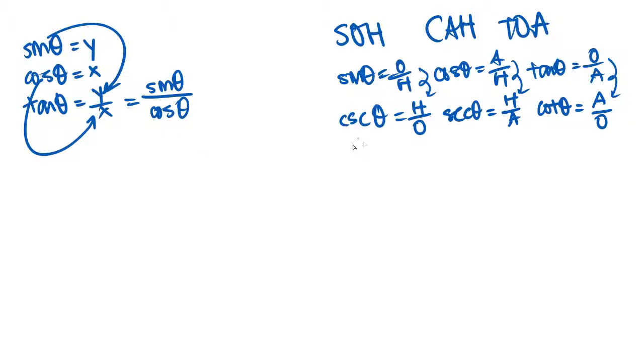Okay, so you can rewrite that too. Like, cosecant theta is 1 over y, right? And then secant theta is 1 over x, and cotangent theta is just x over y.